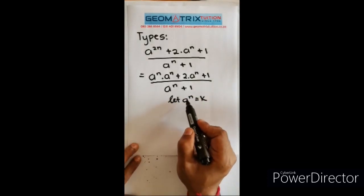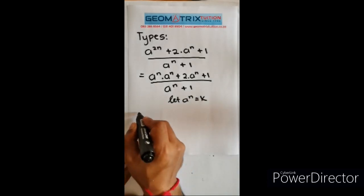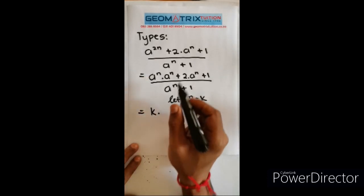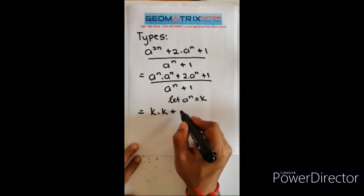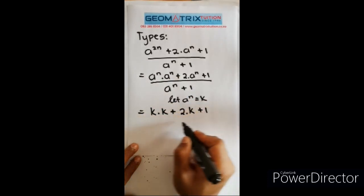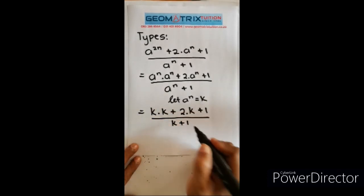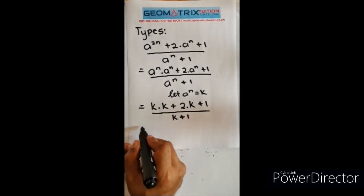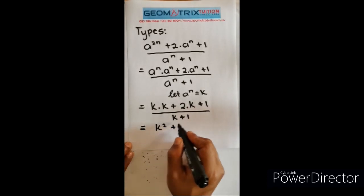Now all you do is wherever you see a to the n you're going to substitute k. So watch this: here what does this a to the n become? k times by a to the n becomes k plus two times a to the n is k plus one all over a to the n is k plus one.